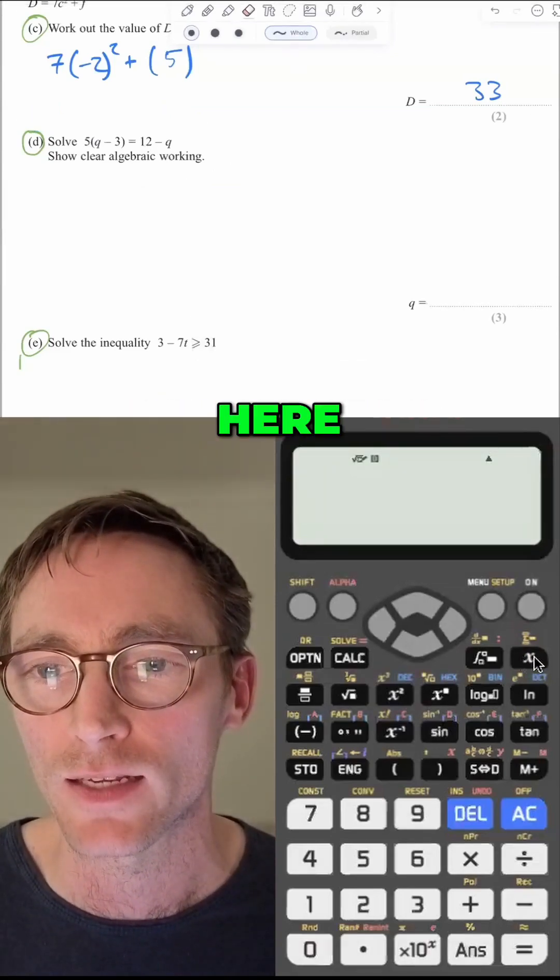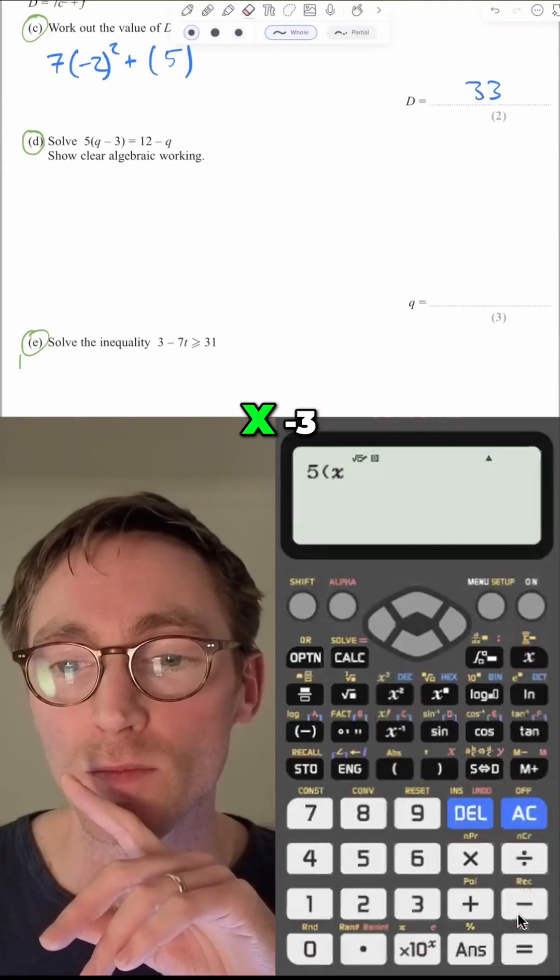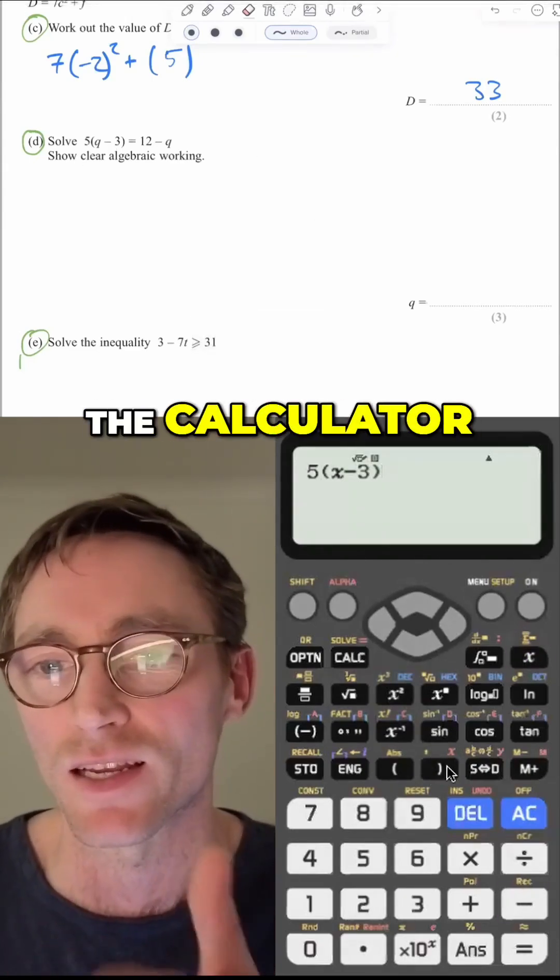So you see in the top right of this calculator here, it's X. So let's type this equation in. Five brackets, X minus three, close bracket. Remember, we're swapping Q out for X just because the calculator doesn't have a Q.